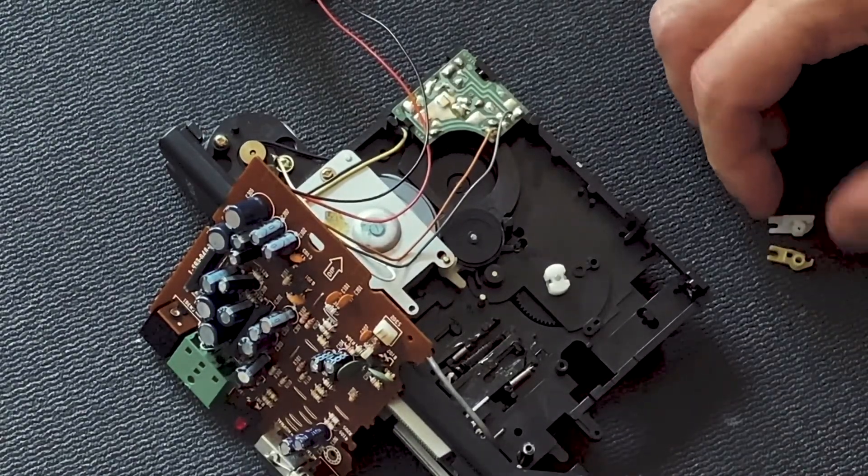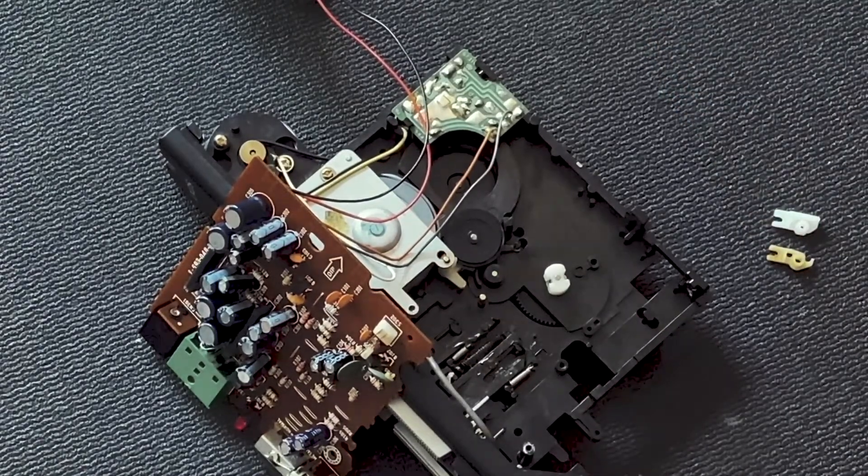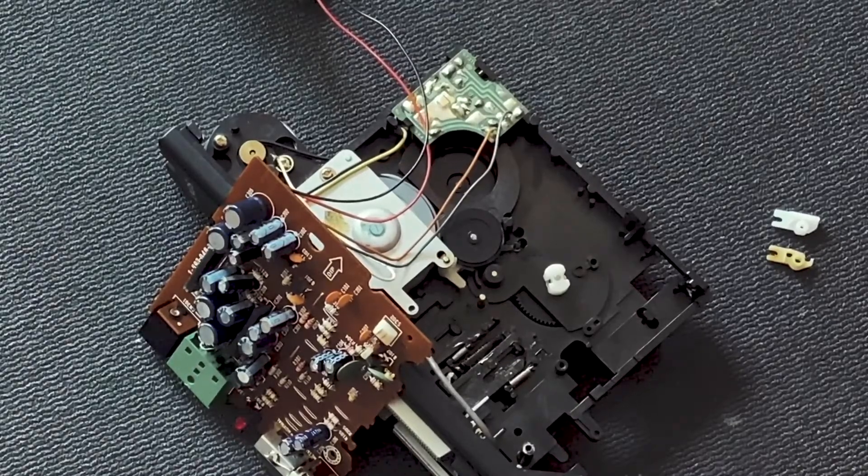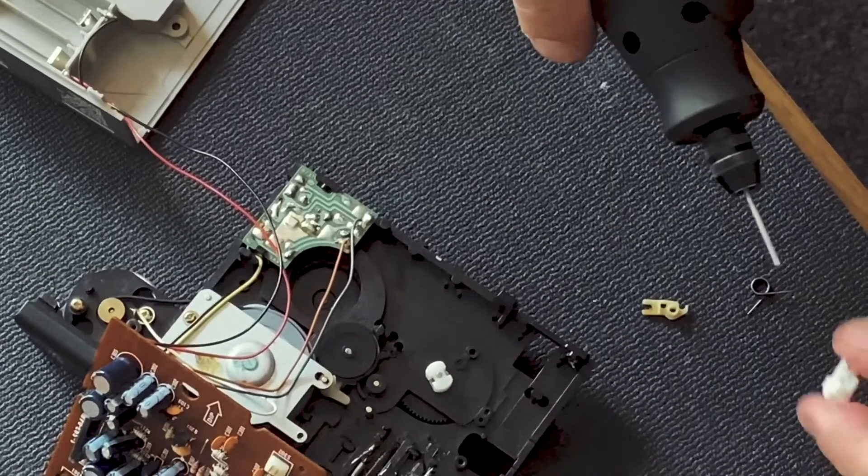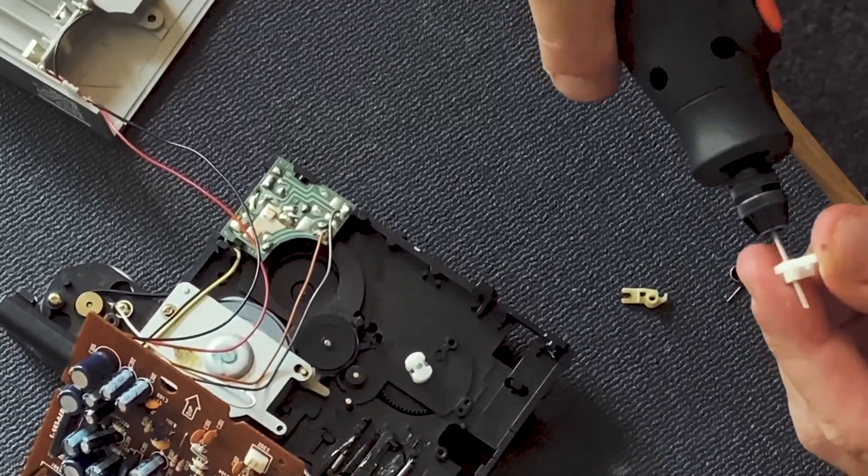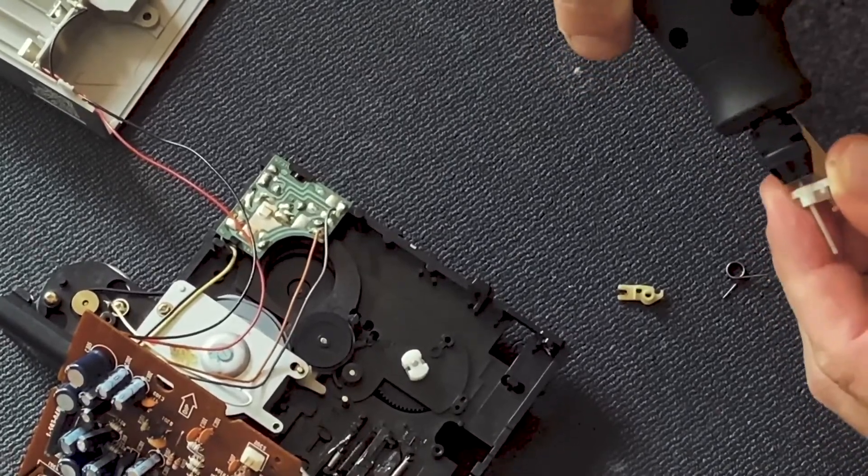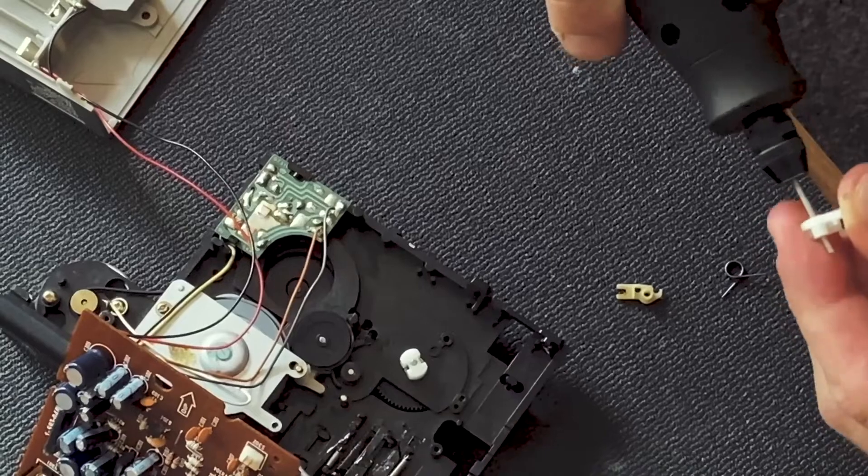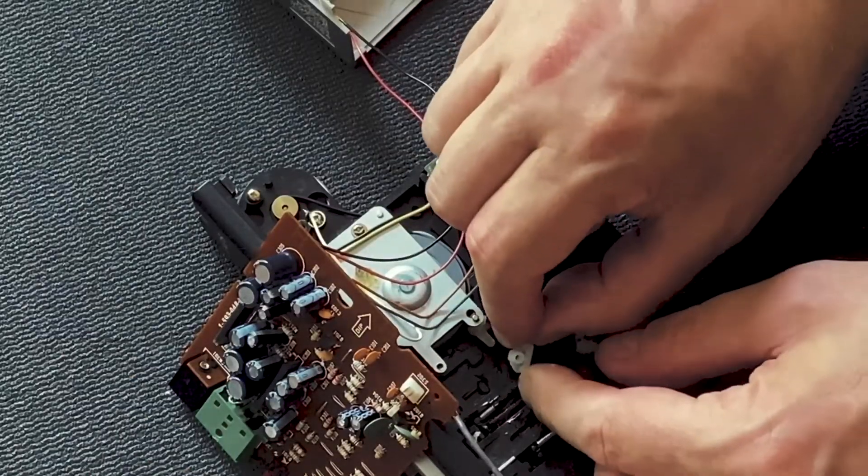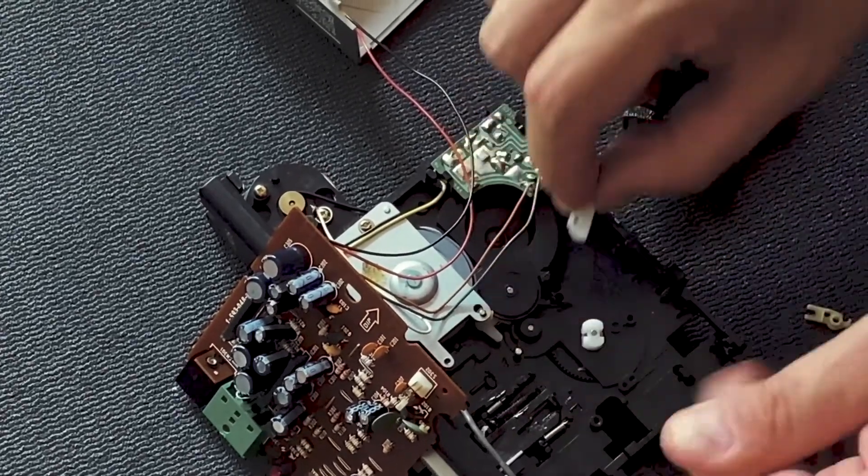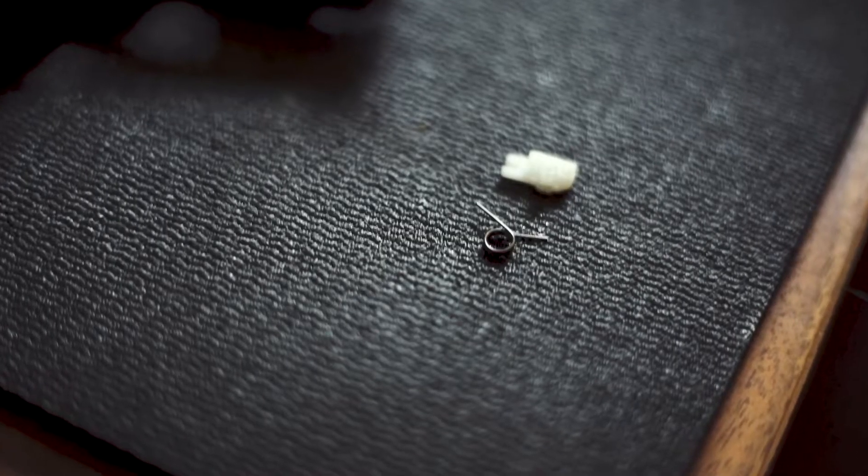The replacement part might need some modification. Use a drill to widen the center hole, starting with smaller bits and working up to 2 millimeters. Once ready, carefully place the metal spring into the new part, ensuring it's secure.